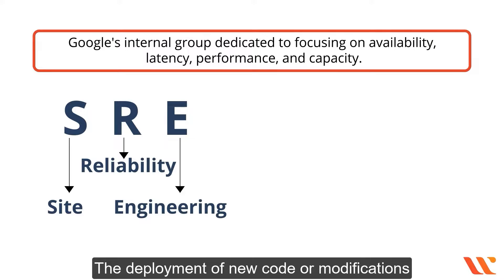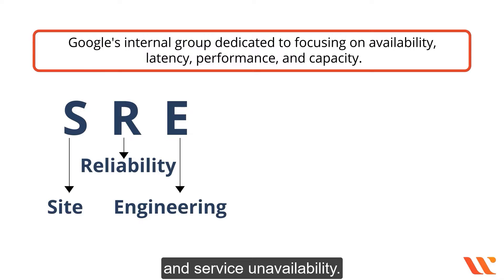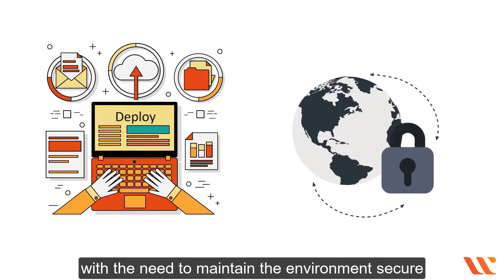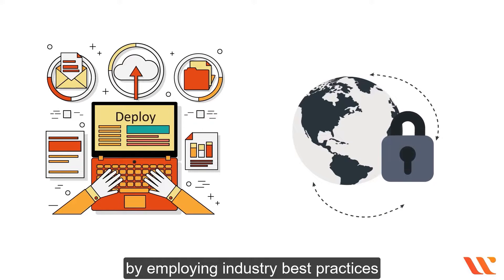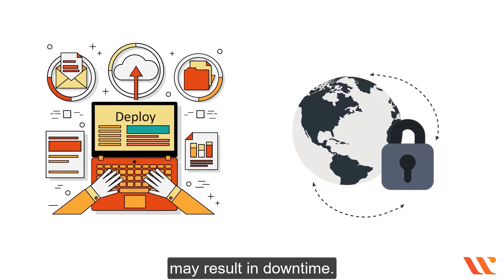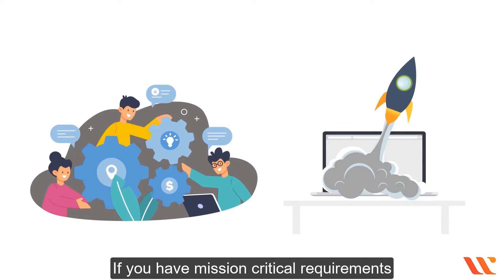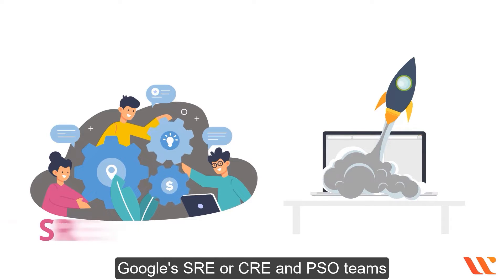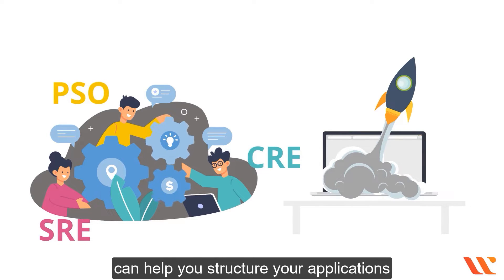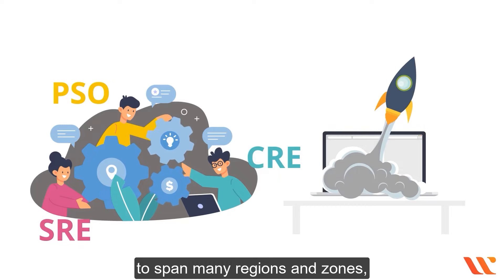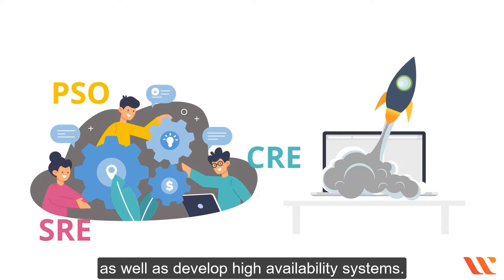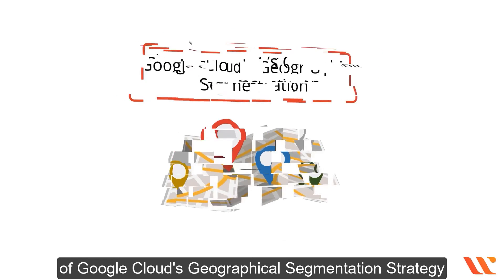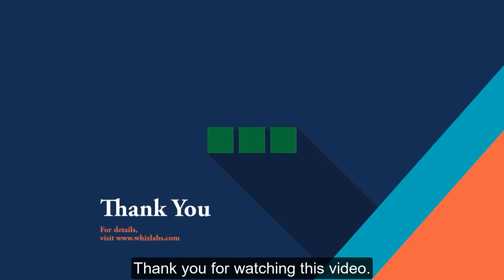The deployment of new code or modifications to the environment are linked to outages and service unavailability. SRE combines the requirement to deploy new software with the need to maintain the environment secure, employing industry best practices with the awareness that these changes may result in downtime. If you have mission-critical requirements and need to architect for resilience and disaster recovery, Google's SRE, CRE, and PSO teams can help you structure your applications to span many regions and zones and develop high-availability systems. Hope you have understood the concept of Google Cloud's Geographical Segmentation Strategy. Thank you for watching.